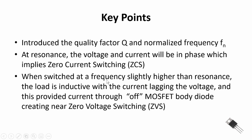The key points: we introduced the quality factor Q and normalized frequency variable F-sub-N. At resonance, voltage and current are in phase, enabling zero current switching. When switched at a frequency slightly higher than resonance, the load is inductive and current lags voltage, providing current through the off MOSFET body diode and creating a near-zero voltage switching condition. So we typically operate LC or LLC resonant converters in a slightly inductive load situation, with a switching frequency slightly higher than resonance. That's resonance — thank you for watching.